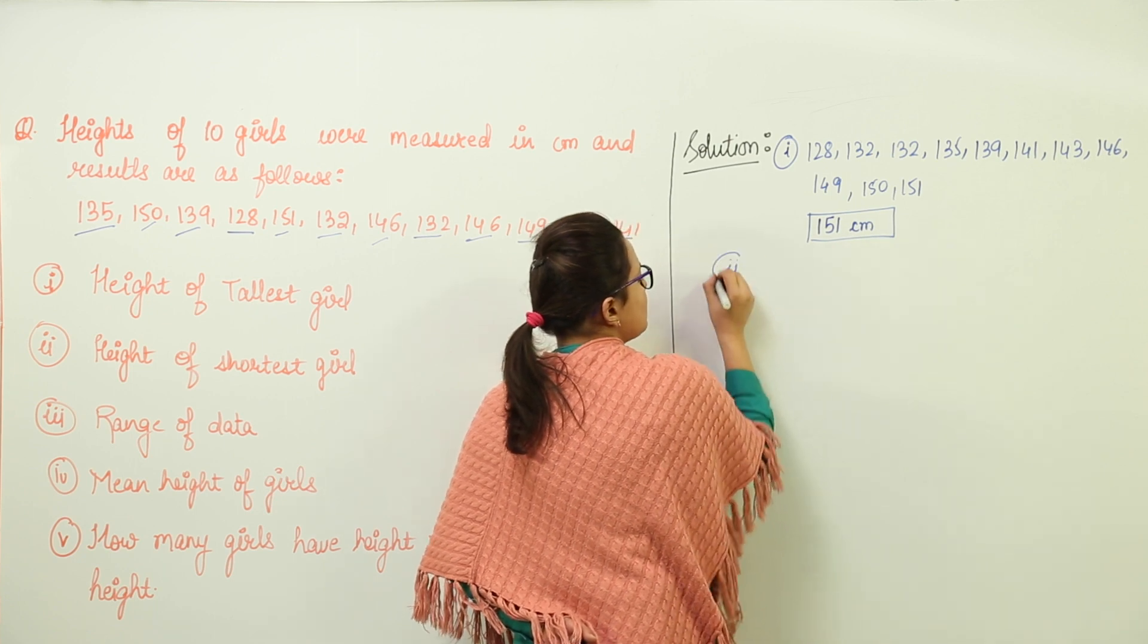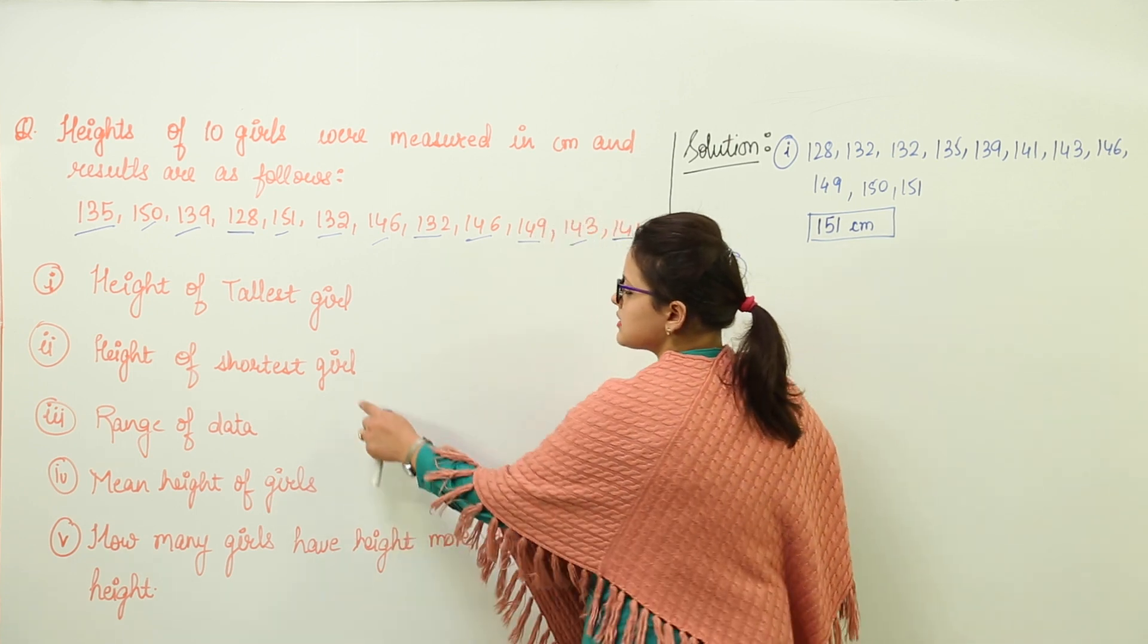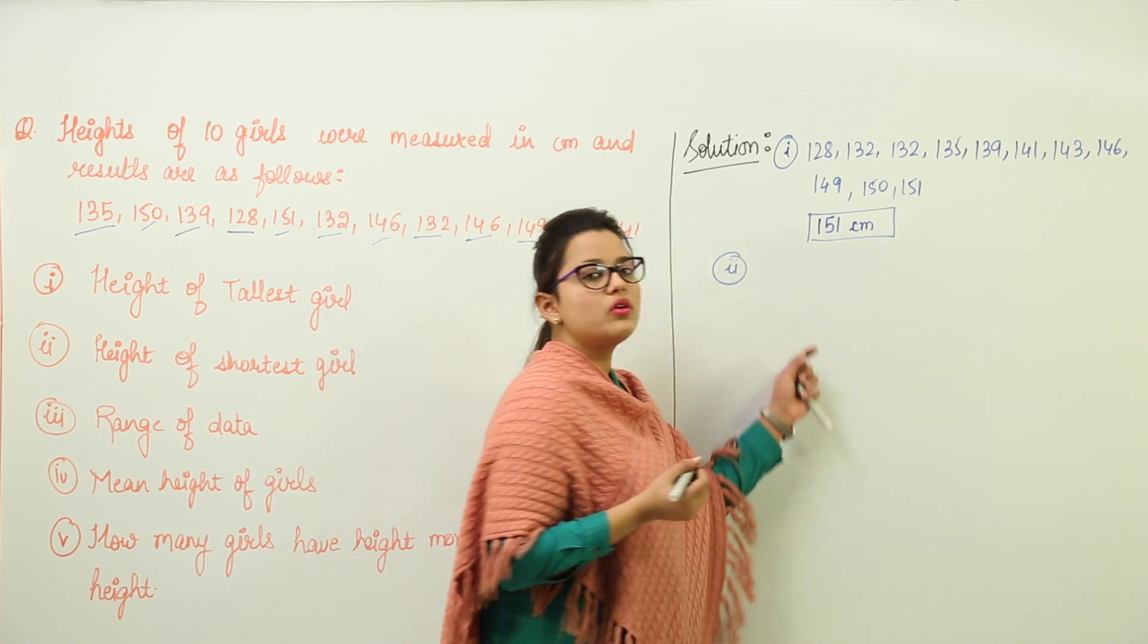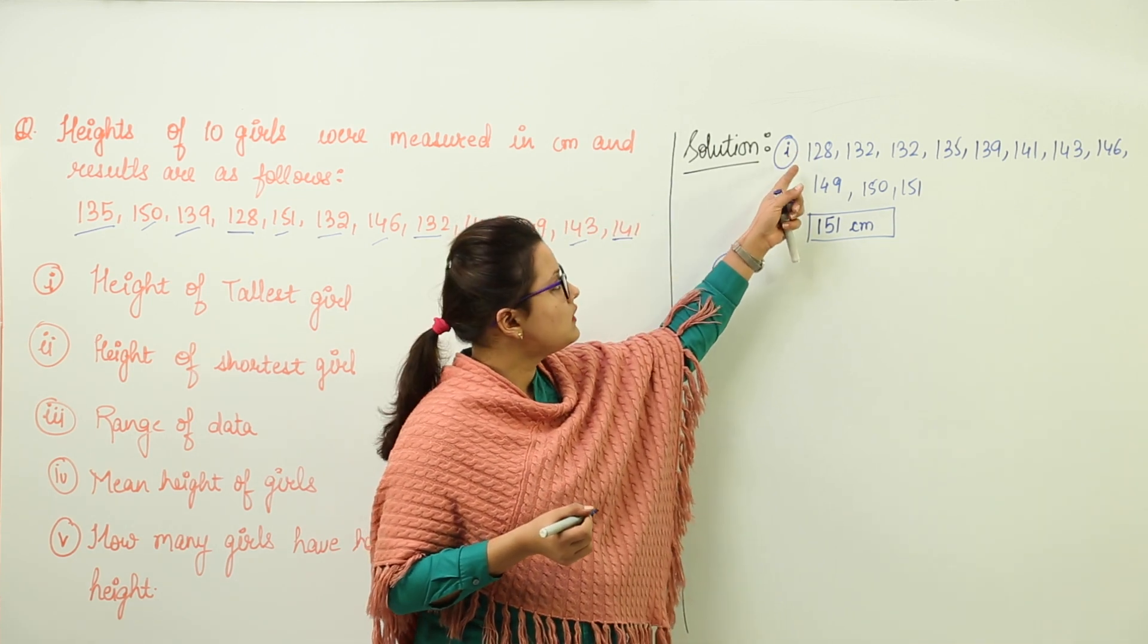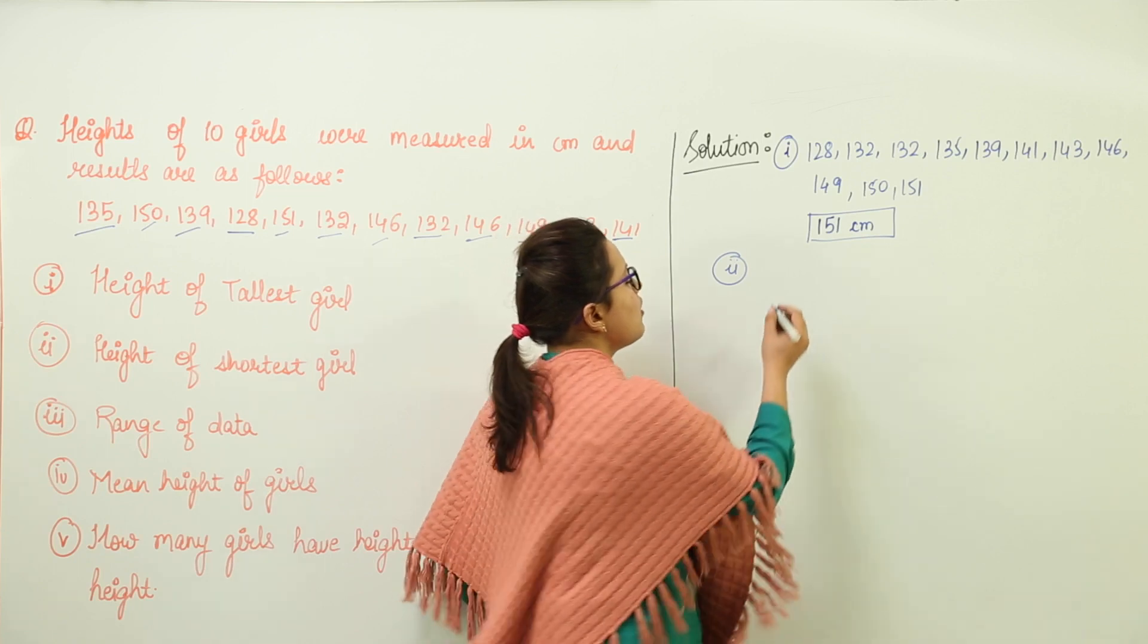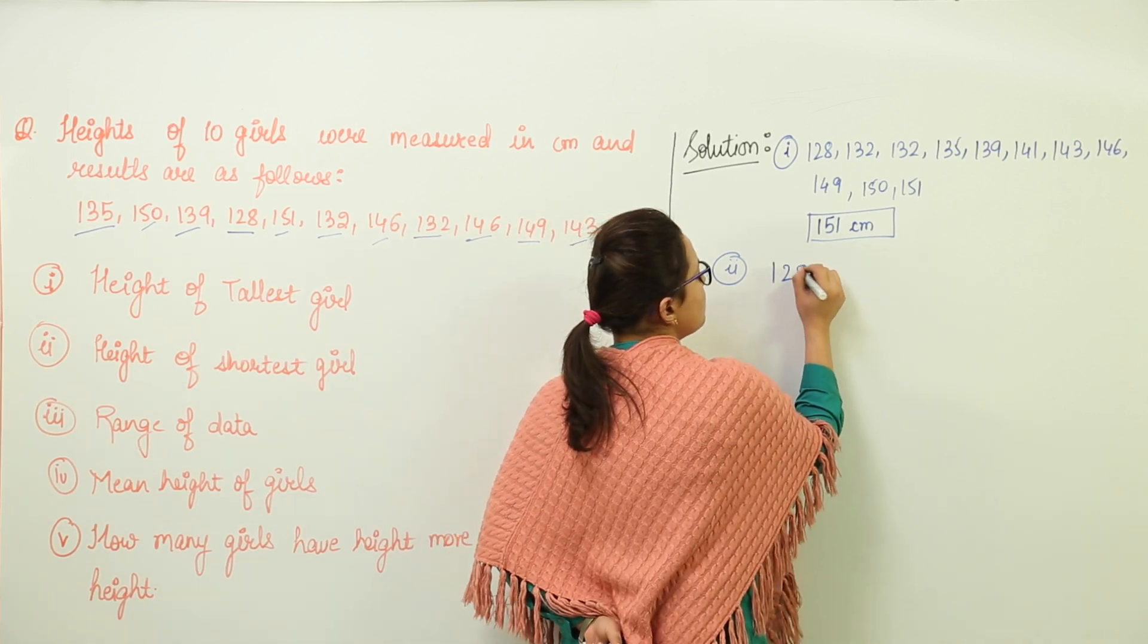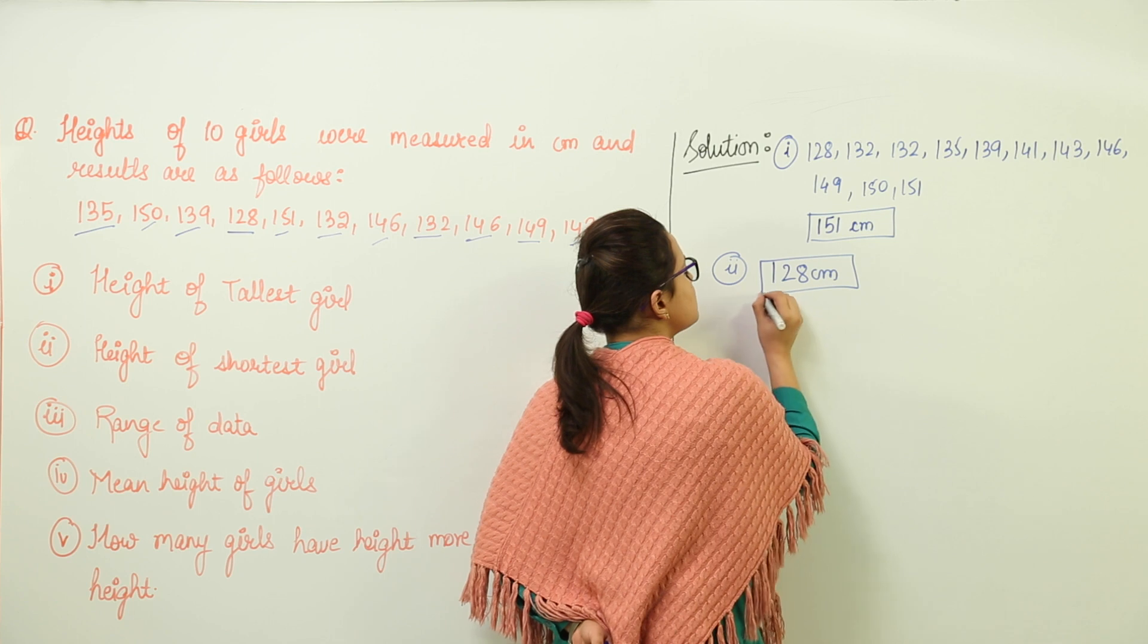Let us answer the second question now. The second question is asking height of the shortest girl. Because we have already arranged the data, we can clearly see the lowest value is 128. So we write 128 centimeters as the second answer.